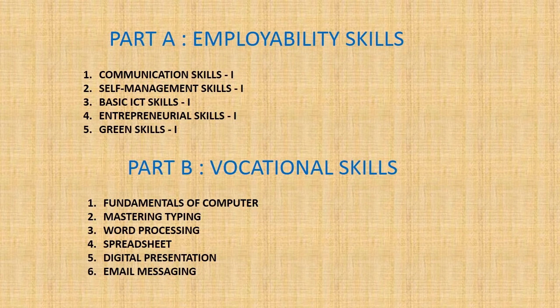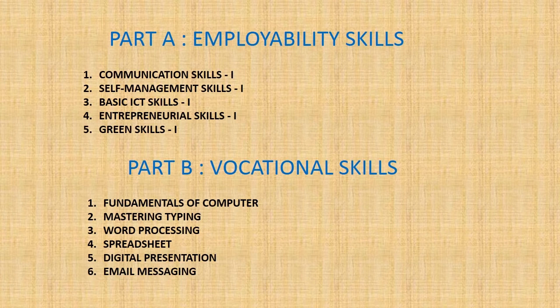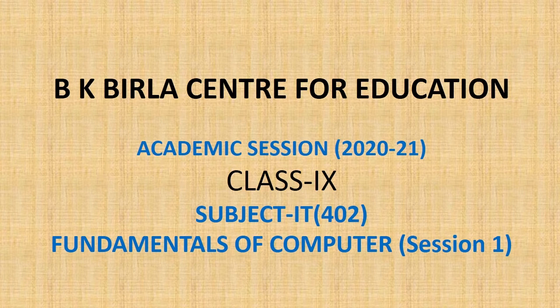Your theory book is divided into two parts. Part A, employability skills, includes the following chapters: communication skills, self-management skills, basic ICT skills, entrepreneur skills, and green skills. Part B, technical or vocational skills, covers fundamentals of computer, mastering typing, word processing, spreadsheet, digital presentation, and email messaging. Today we are starting with fundamentals of computer.